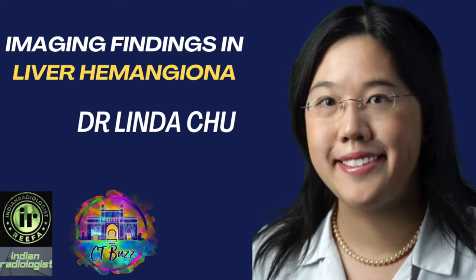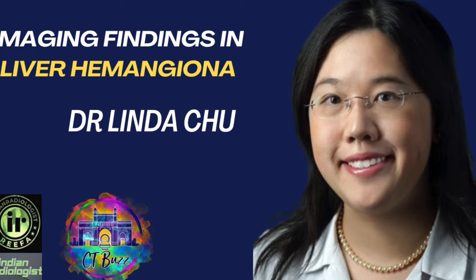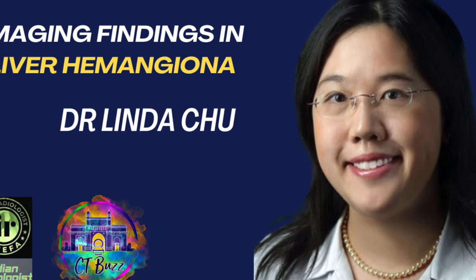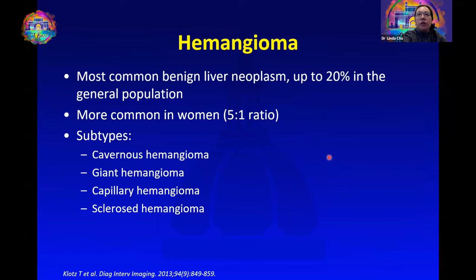The first lesion we'll talk about is a hemangioma. It's the most common benign liver neoplasm and it's found in up to 20% of the general population. It's more common in women and there are different subtypes including cavernous hemangioma, giant hemangioma, capillary hemangioma, and sclerosed hemangioma.